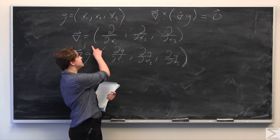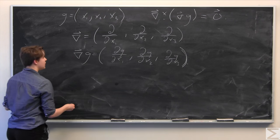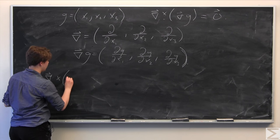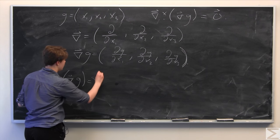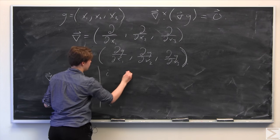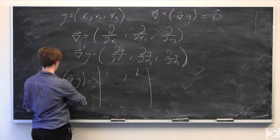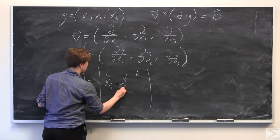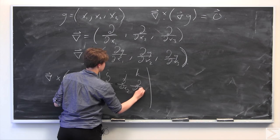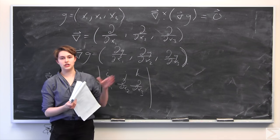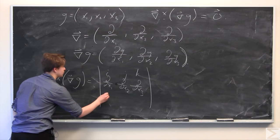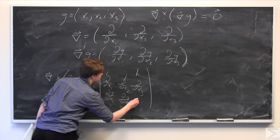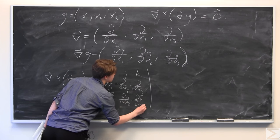So now we need to take this crossed with del g and prove it equals the zero vector. We take the gradient crossed with del g and set up a matrix: the first row is i, j, k; the second row is ∂/∂x1, ∂/∂x2, ∂/∂x3; and the third row is ∂g/∂x1, ∂g/∂x2, ∂g/∂x3.